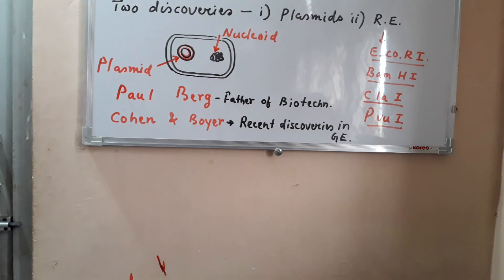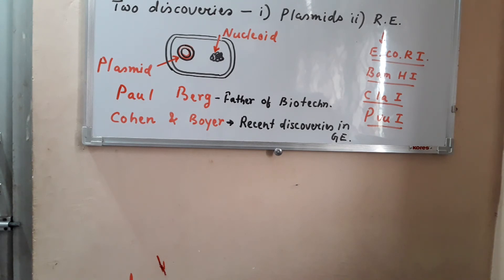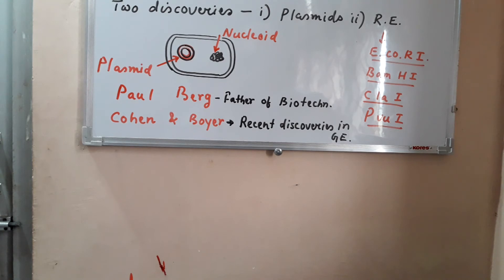We need to classify the restriction endonucleases. These are enzymes that can cut specific parts of the DNA molecule. They are very important discoveries in the field of biotechnology and genetic engineering.